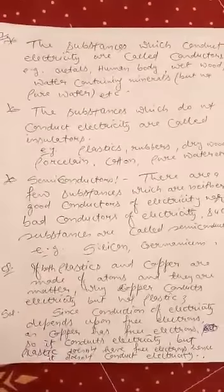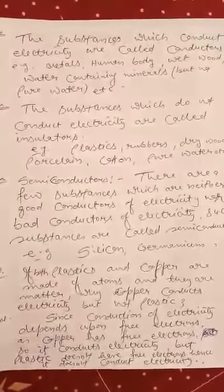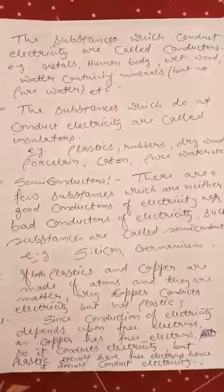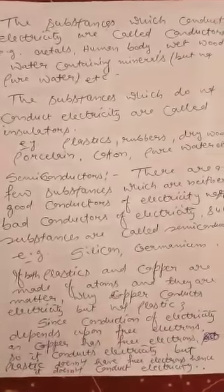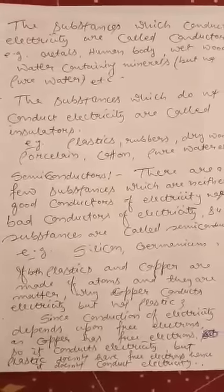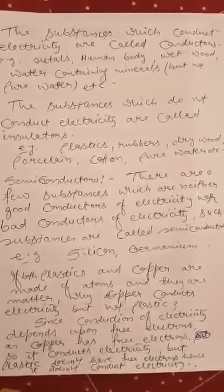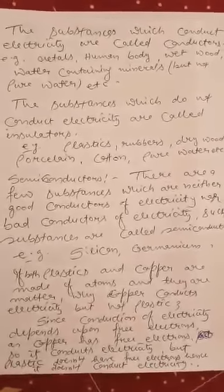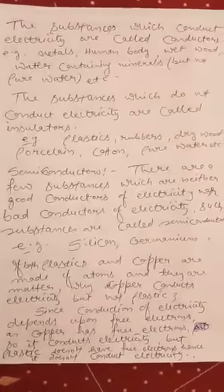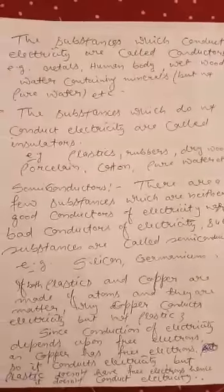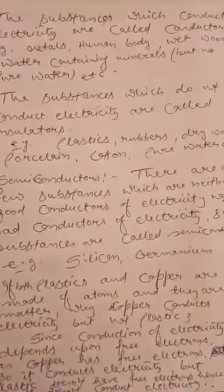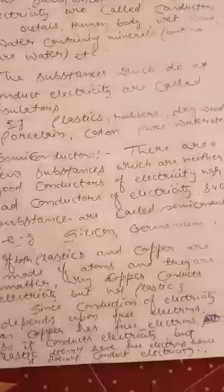There are a few substances which are neither good conductors nor bad conductors — they are called semiconductors. There are a few substances which are neither good conductors of electricity nor bad conductors of electricity; such substances are called semiconductors. For example, silicon and germanium.